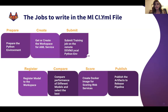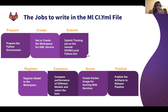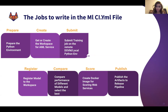When we look at a CI YAML script, compared to software applications, the machine learning application jobs can be quite different. Here is a simple example of seven steps: first, preparing the Python environment for the data scientist; creating a workspace for the machine learning services; submitting a training job; registering the model to the workspace; comparing the performance of different models — as data scientists, it's all about experimentation, so the comparison phase can be very critical; creating the Docker image for scoring web services; and finally, publishing the artifacts to the release pipeline.